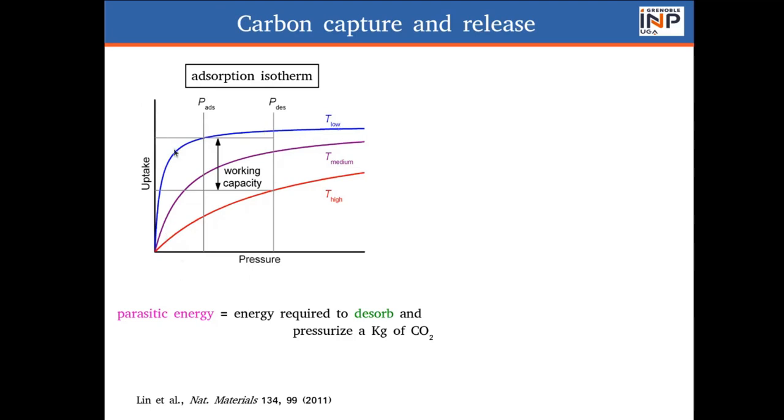The idea is that you want to have this curve the highest possible so that you absorb a lot. And then, you use a temperature swing. You heat your material and this is the adsorption isotherm at highest temperature. The difference between the absorption at low temperature and absorption at high temperature is called the working capacity, and it gives how much gas you can effectively capture at each cycle. The problem is that when the working capacity is large, in order to have a large decrease in binding, you have a very large parasitic energy penalty, which is the energy required to desorb and pressurize a kilogram of CO2.